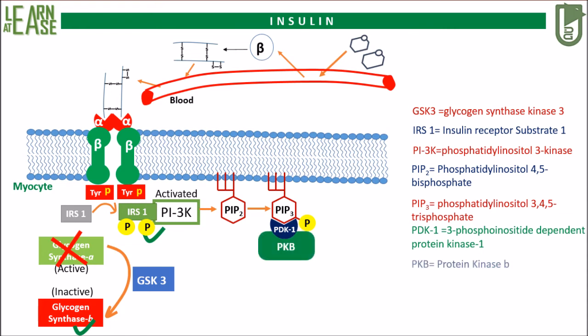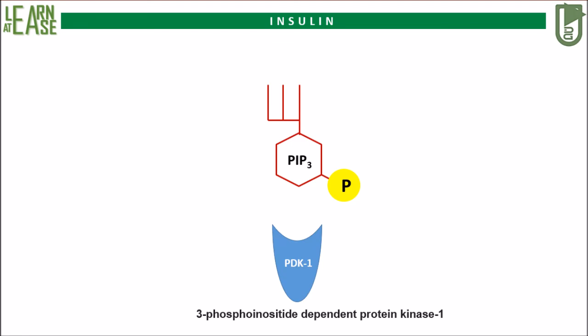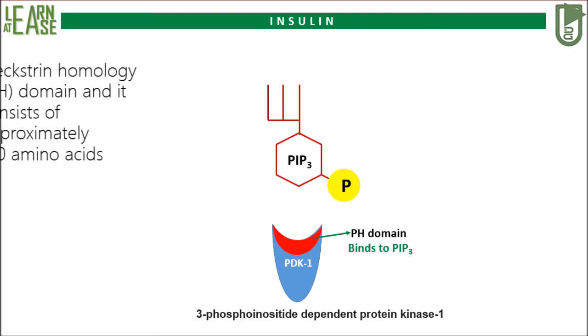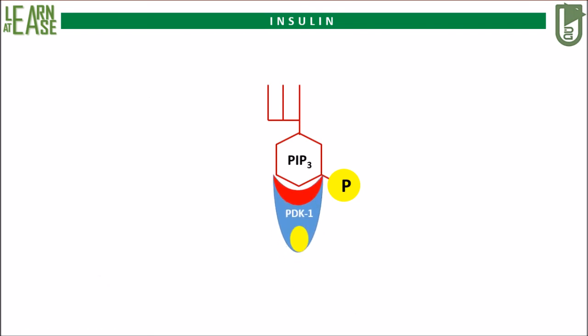Activated PDK1 will recruit protein kinase B and phosphorylates it. PDK1 possesses a PH domain — the pleckstrin homology domain — consisting of approximately 120 amino acids, by which it can bind to PIP3. When PDK1 binds to PIP3, its kinase domain gets activated, and it then recruits protein kinase B and activates it by phosphorylating it.